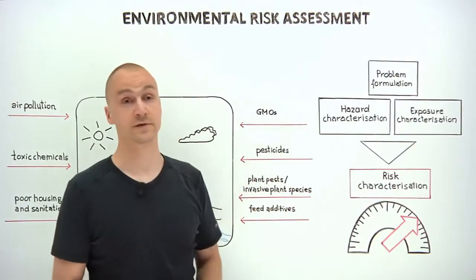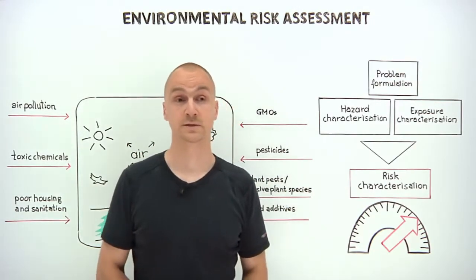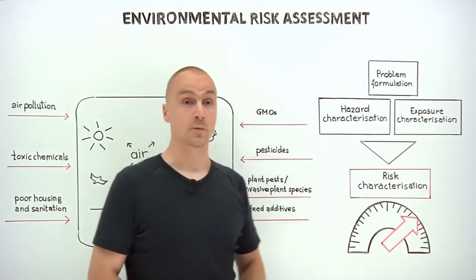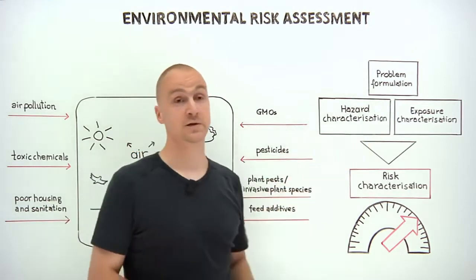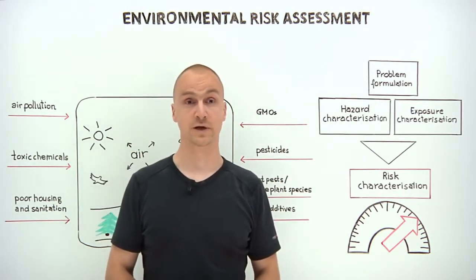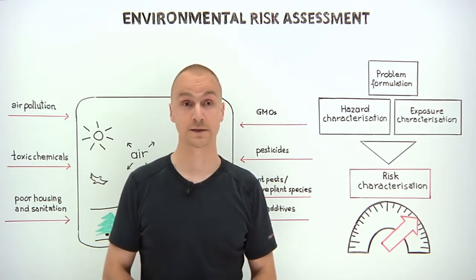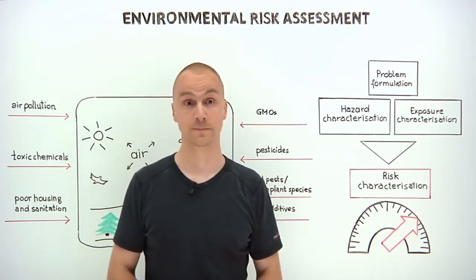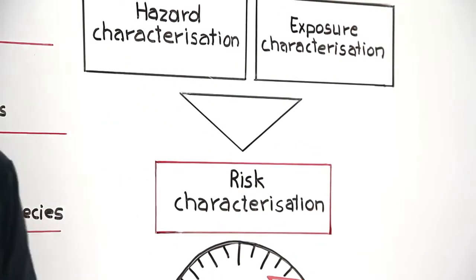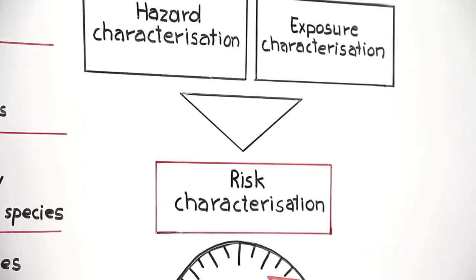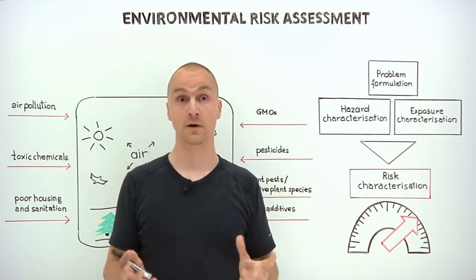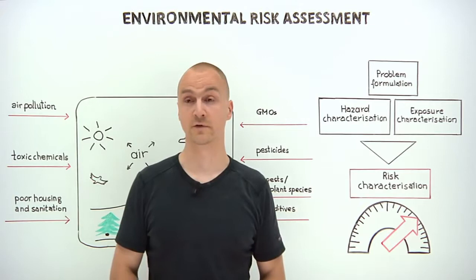In the hazard characterization, potential hazards and the seriousness of potential harm are examined. The exposure characterization considers the likelihood and the level of exposure to the hazard, and thus how likely it is that harm will occur. The final step involves the characterization of risk, where the seriousness and the likelihood of harm are combined to estimate the level of risk.